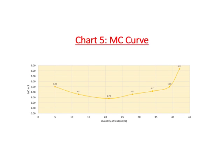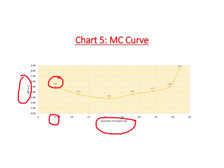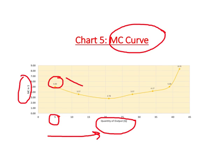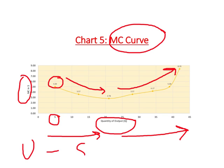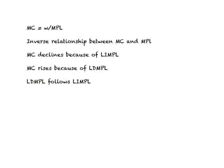On this diagram, marginal cost in dollars is on the vertical axis and quantity of output Q is on the horizontal axis. We plot the points relating to marginal cost — for example, when the firm produces five units, the marginal cost is five dollars. Joining those points gives us a marginal cost curve. Initially, as the firm increases output, marginal cost declines; as it increases further, marginal cost rises. The marginal cost curve is U-shaped, much like the AVC or ATC curves.